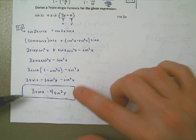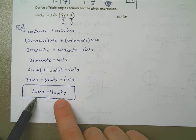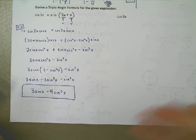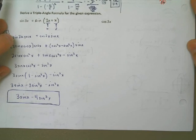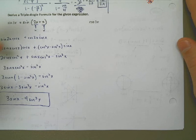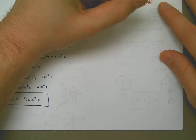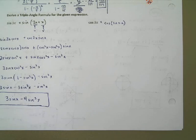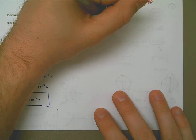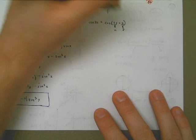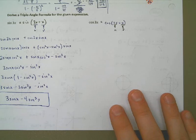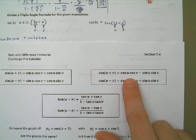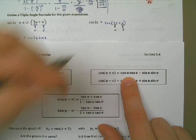Now let's try this for the second thing — let's do the same thing for cosine of 3x. The only difference is which formula we're using. I'm going to start the same process: rewrite 3x as 2x plus x, call 2x as u and x as v. For cosine of two angles added together, it looks like I need to do cosine of 2x times cosine of x, minus sine of 2x times sine of x.